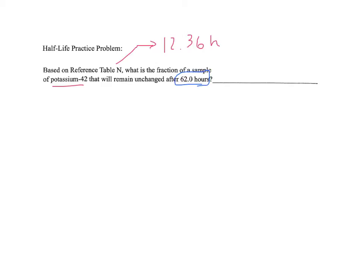The next thing we're going to do is we're going to divide the time past by the half-life of what we're looking at, in this case, potassium-42.